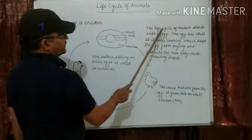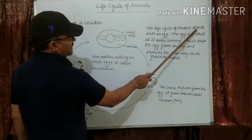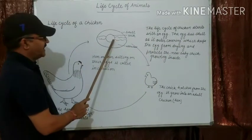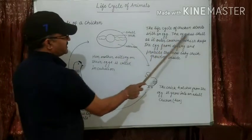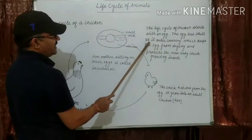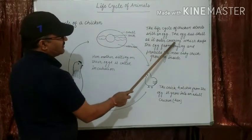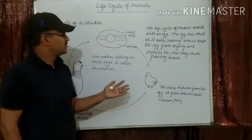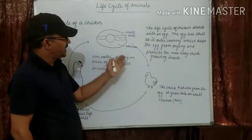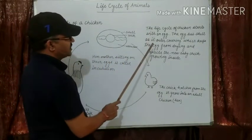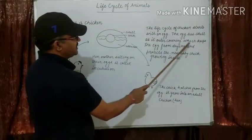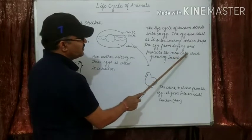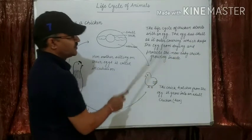The life cycle of a chicken starts with an egg. The egg has its shell as its outer covering. The shell keeps the egg from drying and protects the new baby chick growing inside — these are the two functions of the shell.